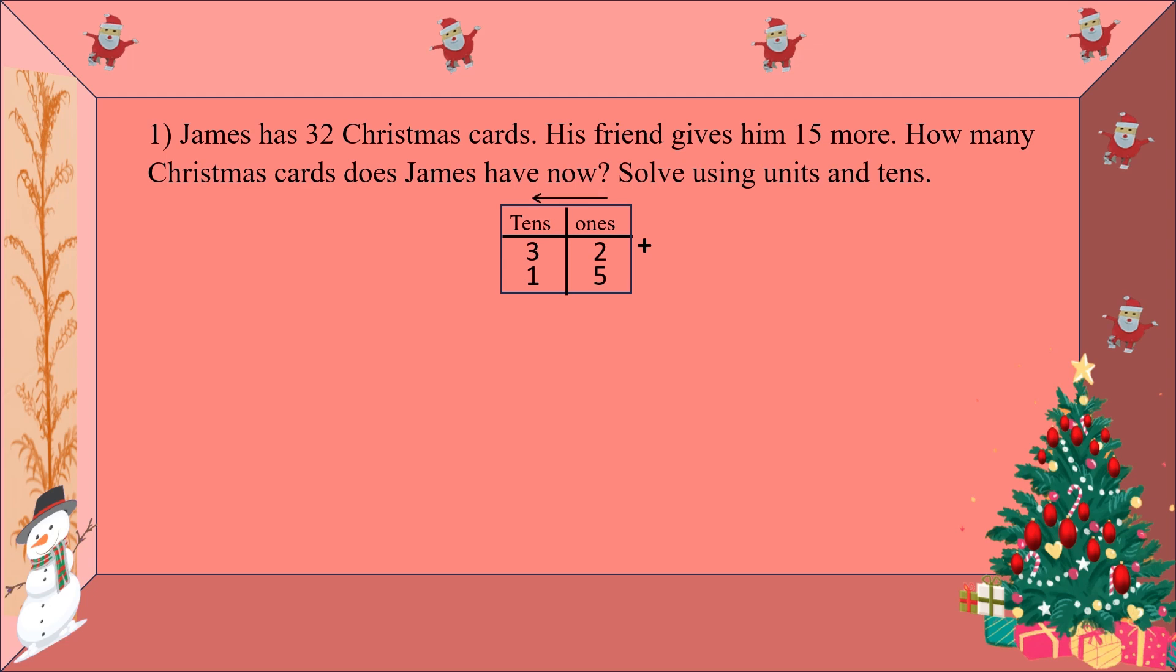Now for adding, you have to add the ones place first and then the tens place. You can add using fingers. Use fingers for the small number and count on fingers numbers after the big number. So 2 plus 5: hold 2 in hand and count after 5. So it comes out to be 7. Same way, 3 plus 1: hold 1 in hand and count after 3. So you get 47. The answer is James has 47 Christmas cards.